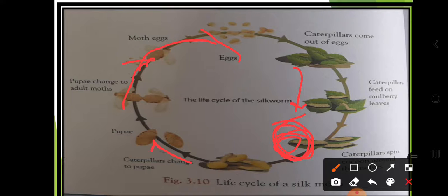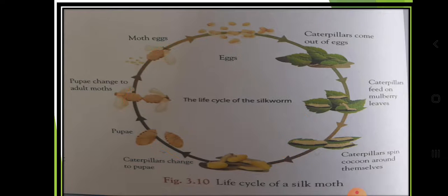In nature, this life cycle occurs once a year. It takes a long time to make a cocoon. However, under experimental setup in sericulture, it can occur up to three times a year.